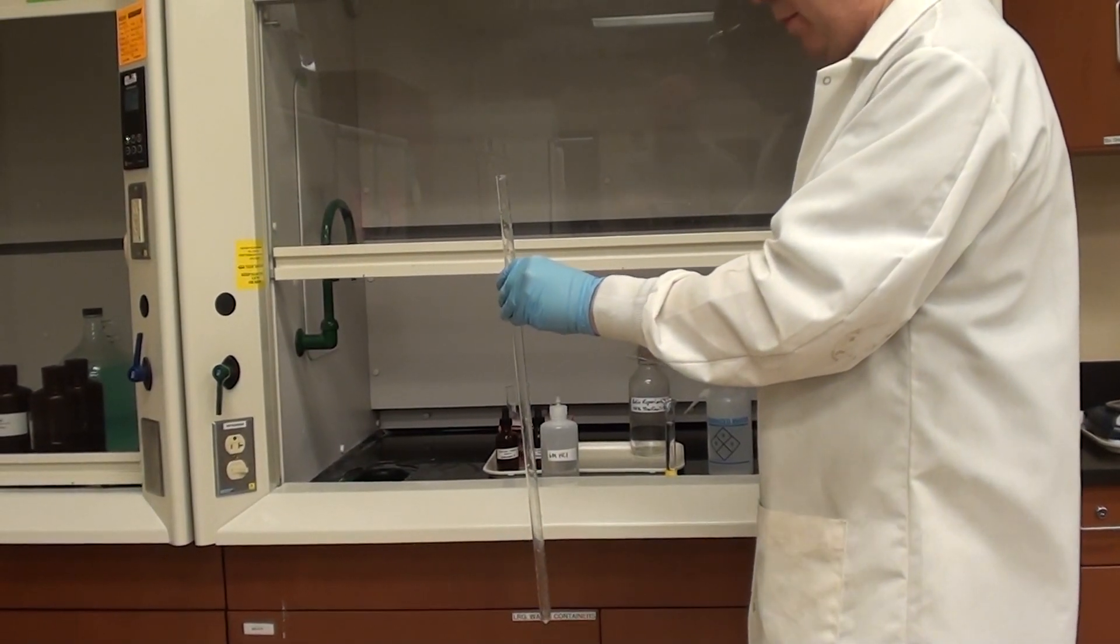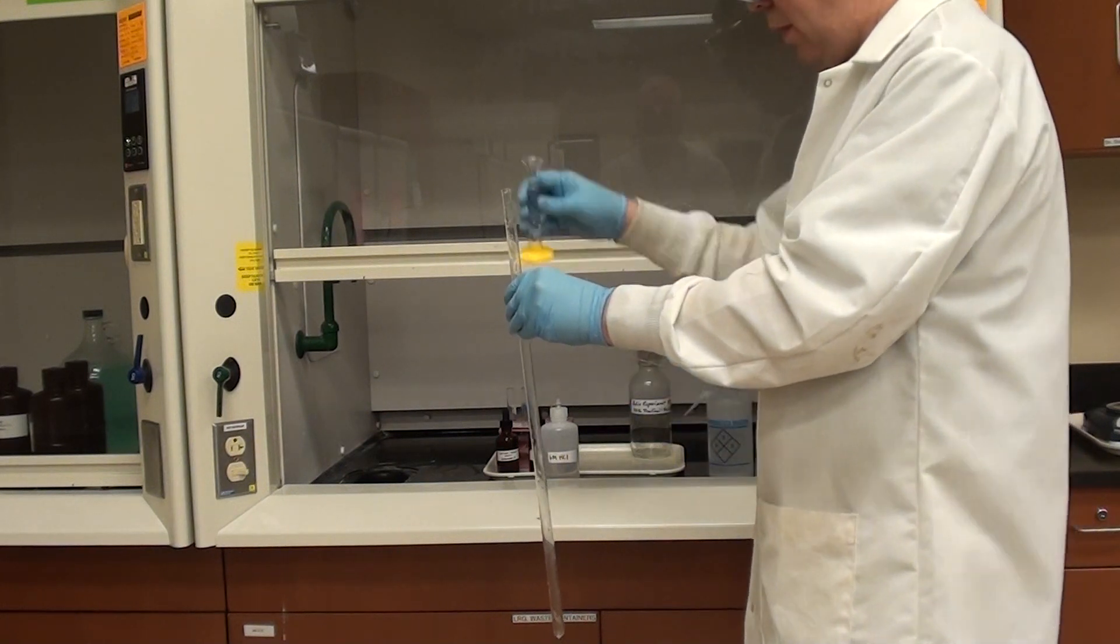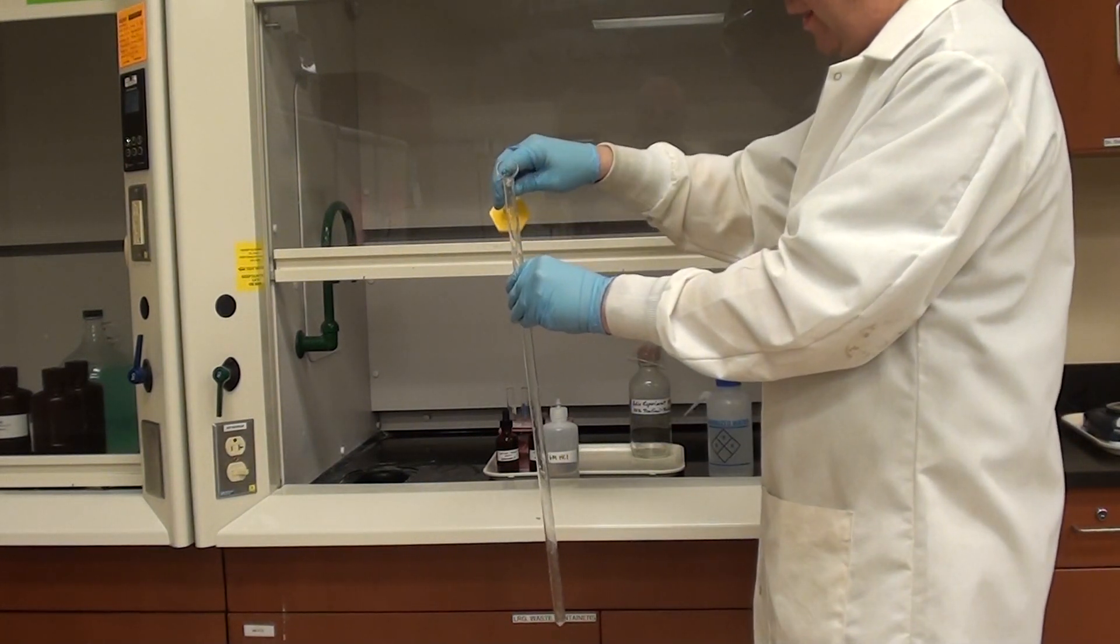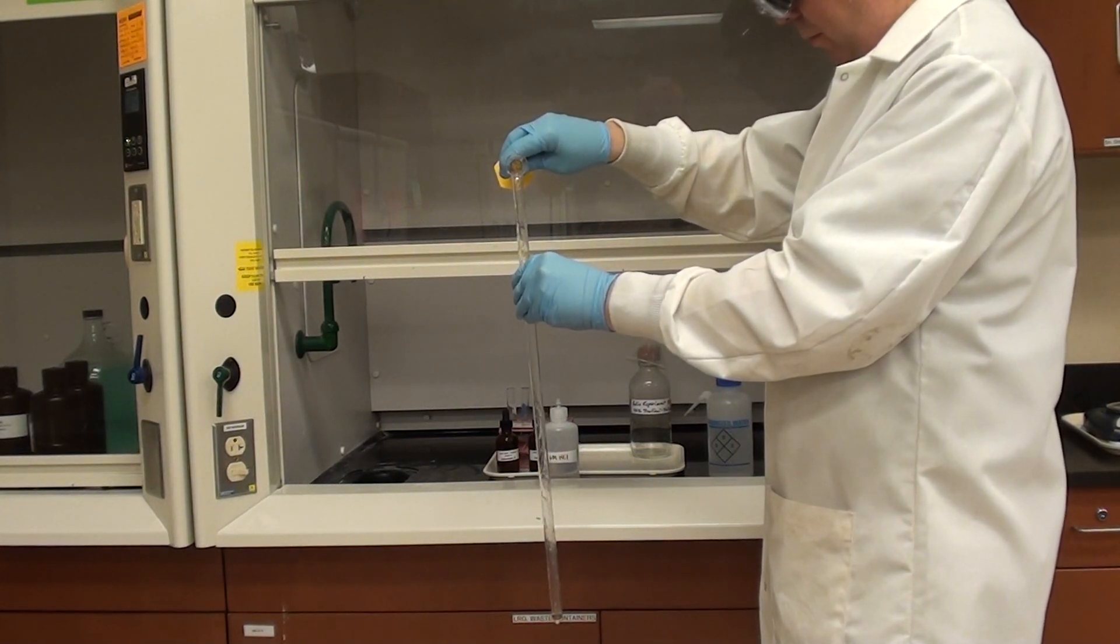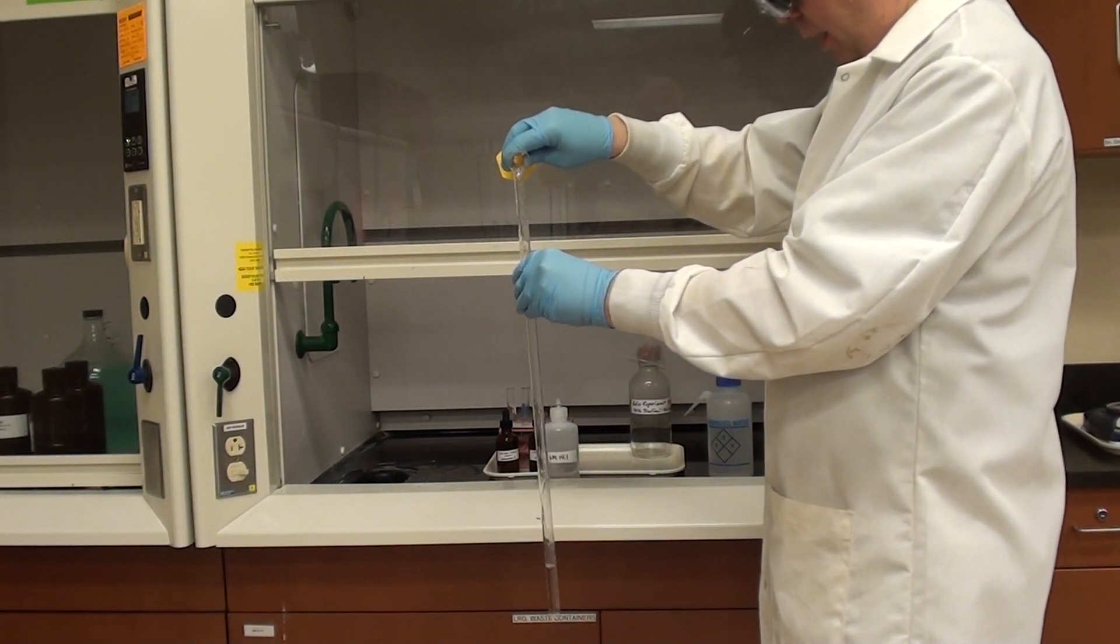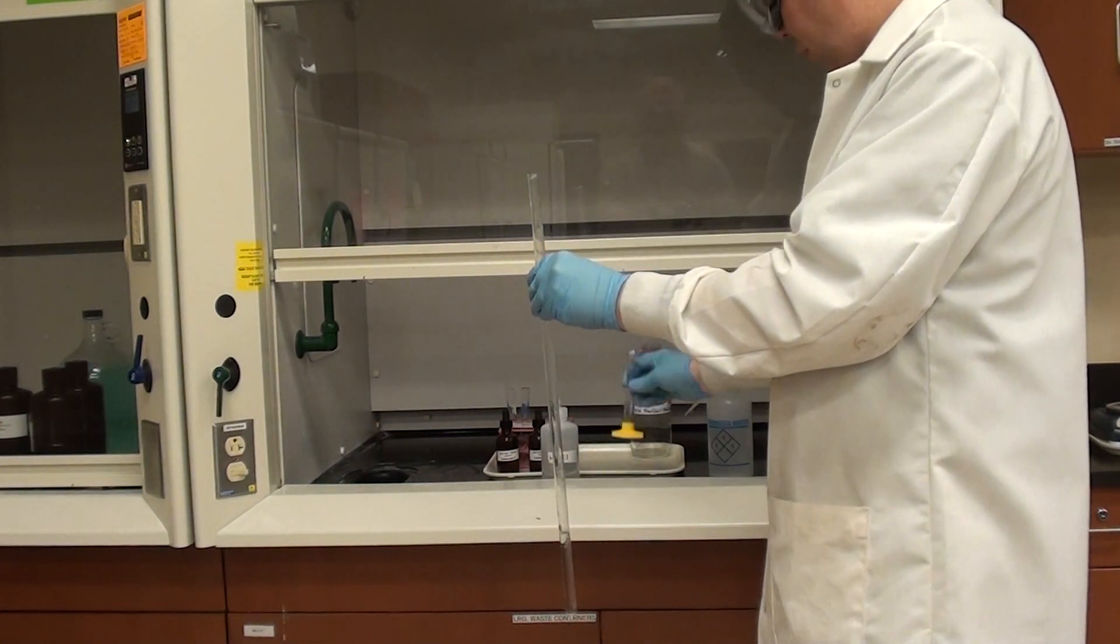So we're going to add some 6 molar HCl to the eudiometer tube. And this is 10 mils. It's not as bad as 12 molar but I still like to use it near a fume hood. So I'm just going to go ahead and add the 6 molar HCl like this and it sits in the bottom of the eudiometer tube.